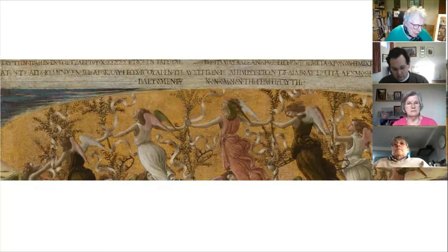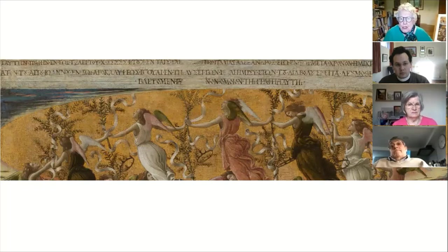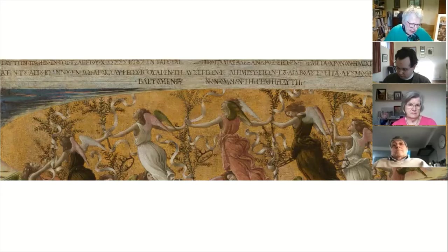Botticelli was a follower of Savonarola and really believed this firebrand monk had the truth and was promising divine retribution for Florence. Savonarola even managed to negotiate a separation from the papacy for Florence. Botticelli was painting these paintings through very turbulent times, and this Nativity painting reflects this — not only in the Greek inscription at the top, but also in what is actually in the painting. It's a very interesting and unusual painting because of its iconography.